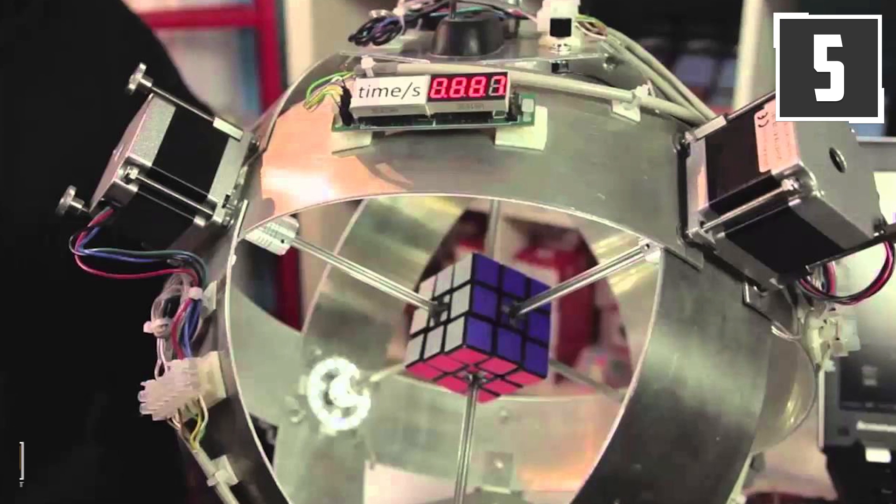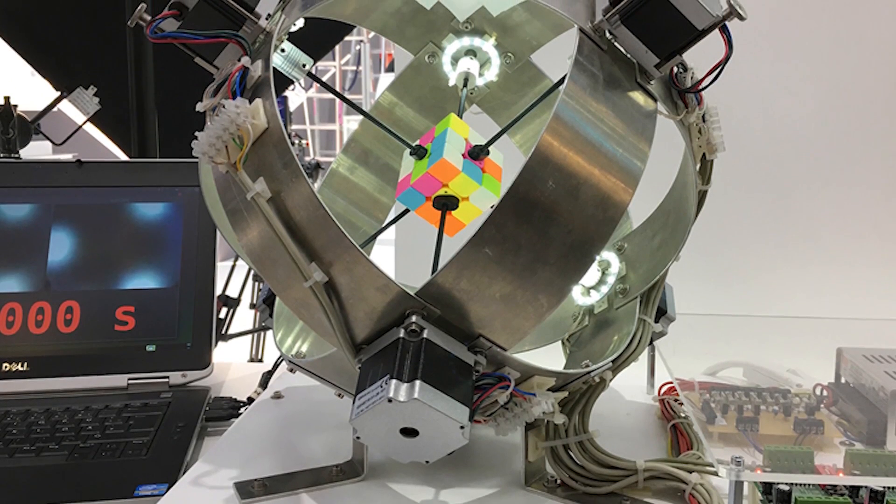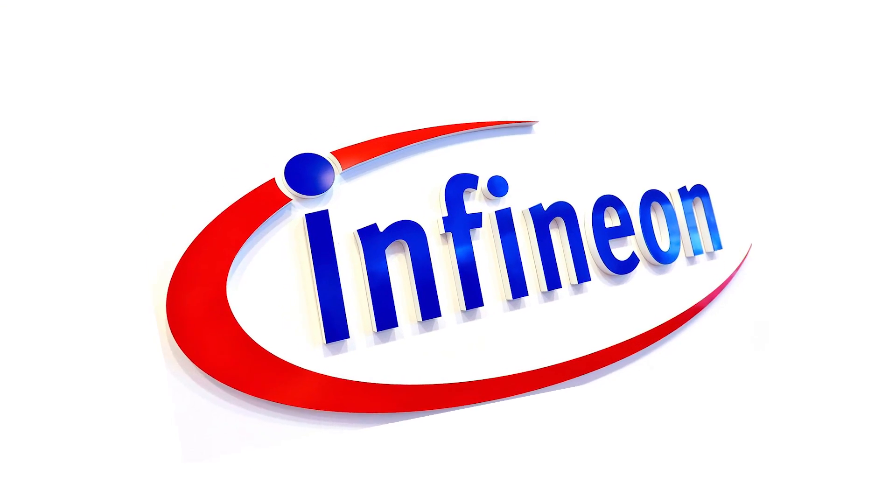TechJoint presents 5 Fastest Robots in the World. Number 5 – Sub1. The Sub1 was the brainchild of the German technological company known as Infineon.